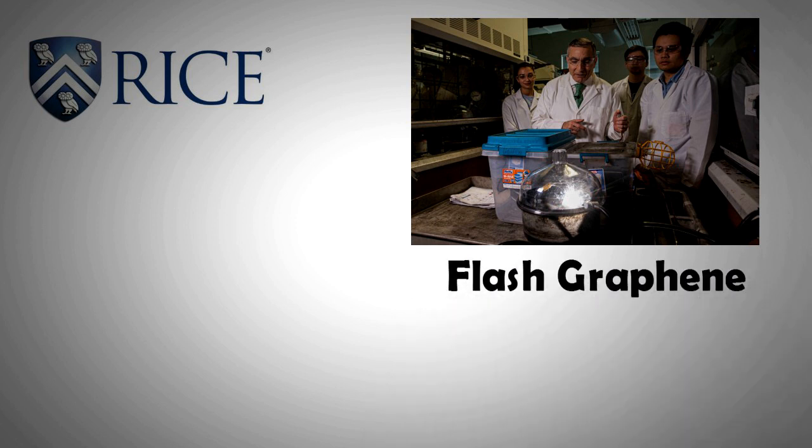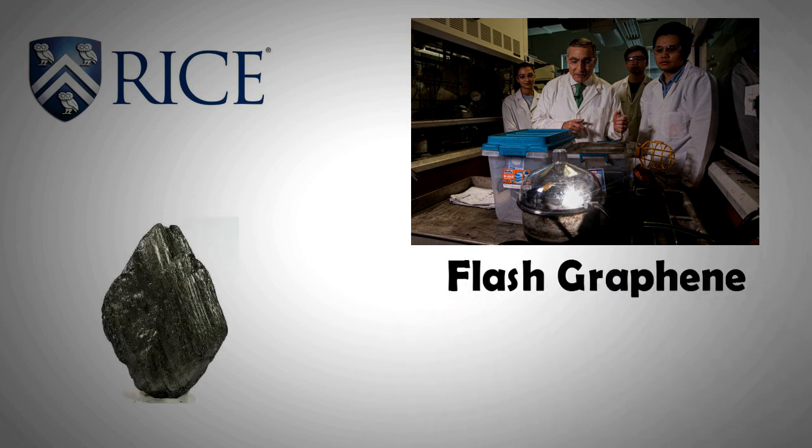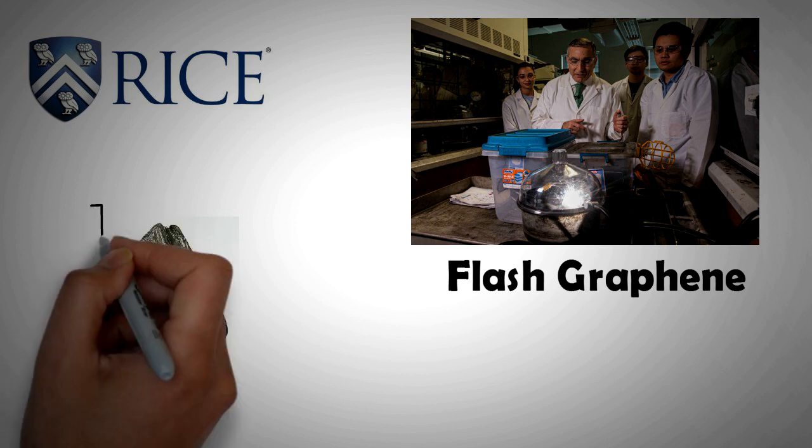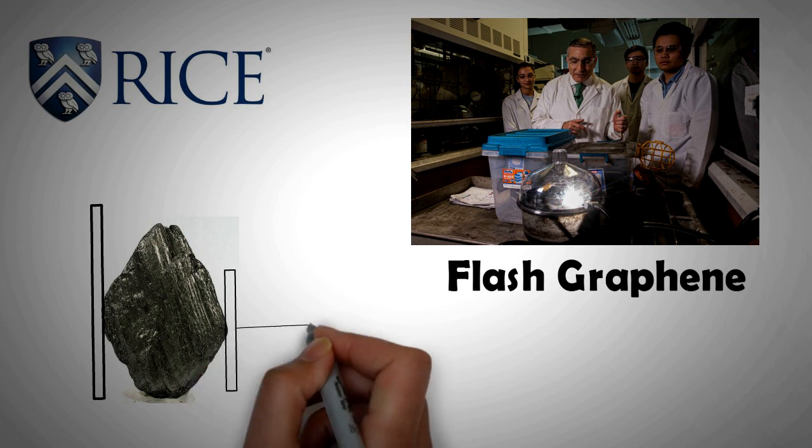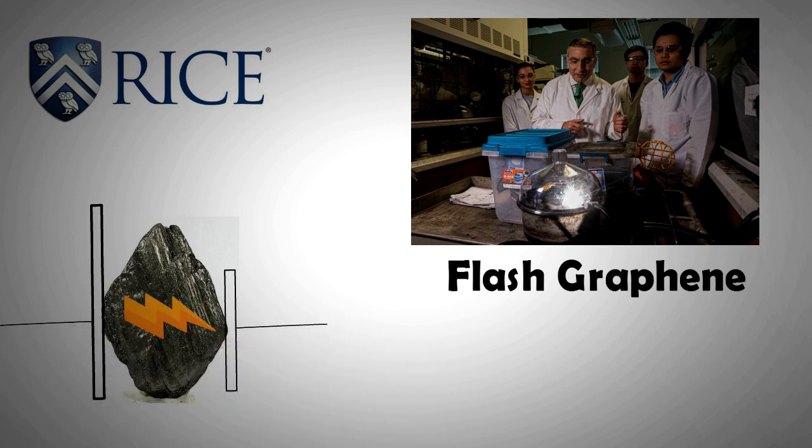This process is simple. A flash of a high current, 200 volts, is passed through any solid carbon rich substance. The Joule heating takes the temperature to almost 3000 degrees Celsius. This energy breaks up the existing carbon bonds with other elements in the source material which gas out and carbon is retained.